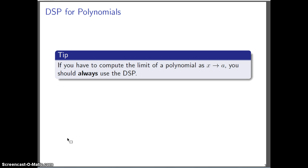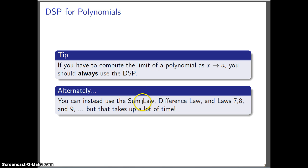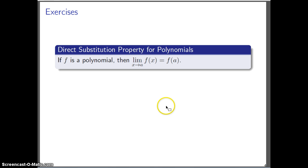So let's look at an example of this in just a minute. The whole point of this is that it's going to save you a lot of time. So if you ever have to compute the limit of a polynomial as x approaches a, you should always use the direct substitution property. You don't have to. You could instead use, as we did in class, the sum law, difference law, and laws 7, 8, and 9. But that's going to take up a lot of time. And you do this once and you realize, oh, this is always going to work out the same way.